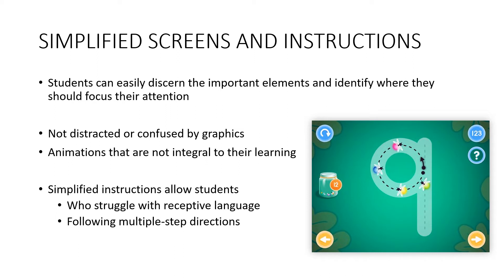Simplified screens and instructions allow students to easily discern important elements and identify where to focus their attention. Students should not be distracted or confused by graphics, and animations not integral to learning should not be present. Simplified instructions also help students who struggle with receptive language and following multi-step directions. For example, looking at a sample app that teaches how to write the number nine: controls at the bottom go back and forward, top left is a redo button, the right side shows the category number, a question mark offers help, and a jar in the center shows the student has 12 points.